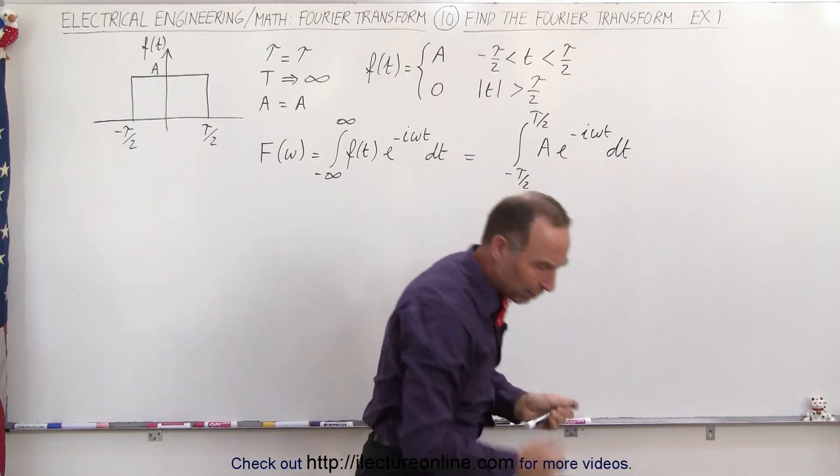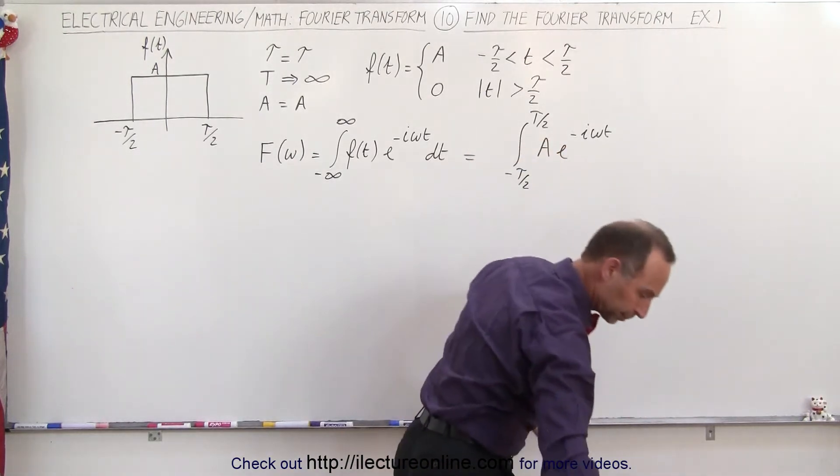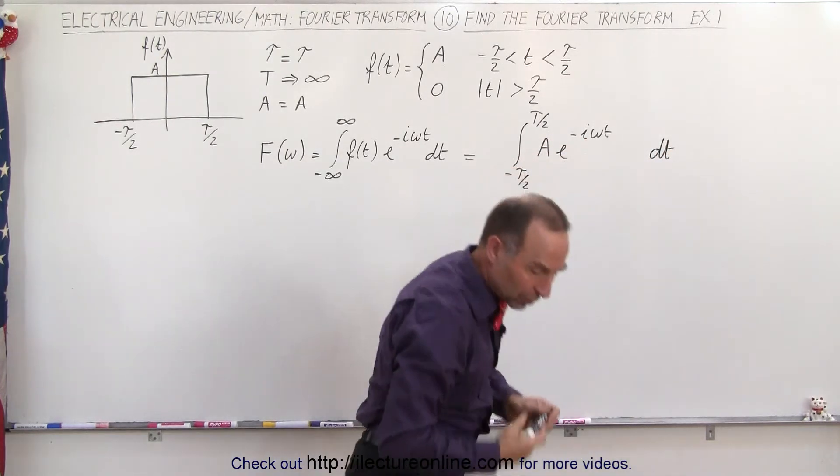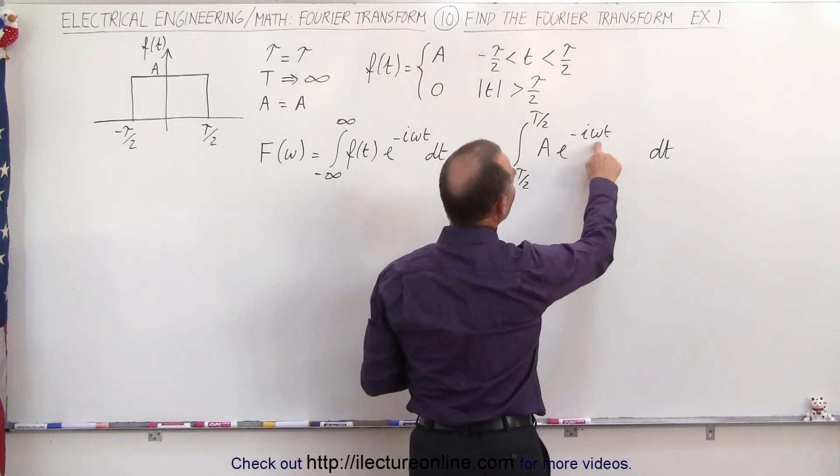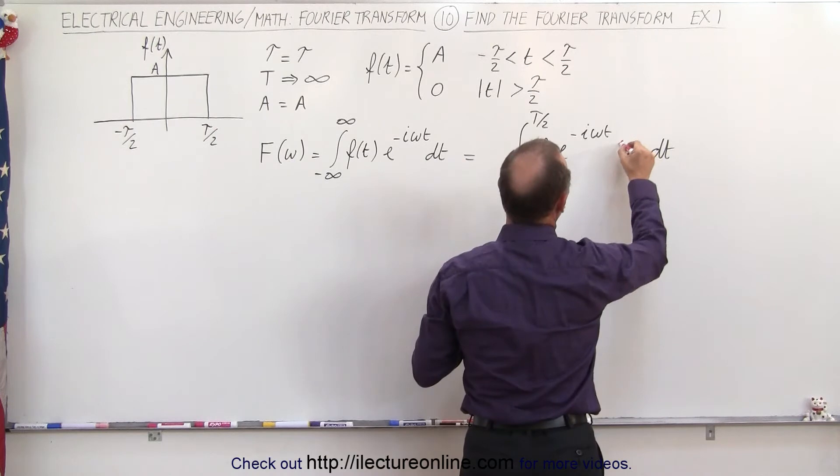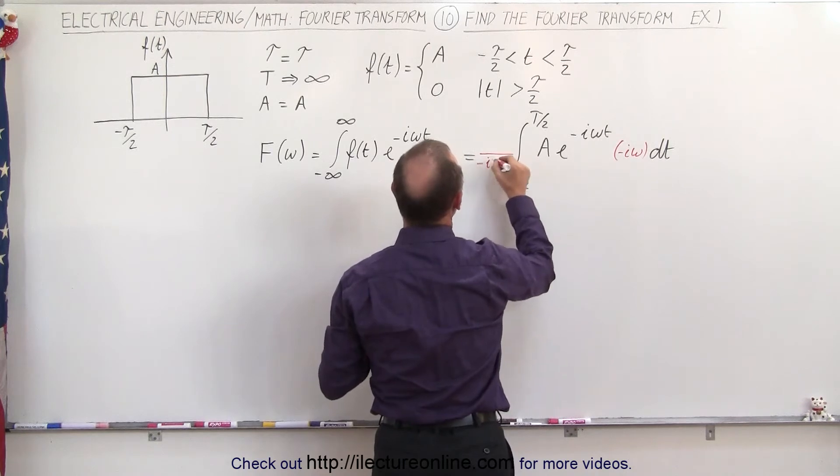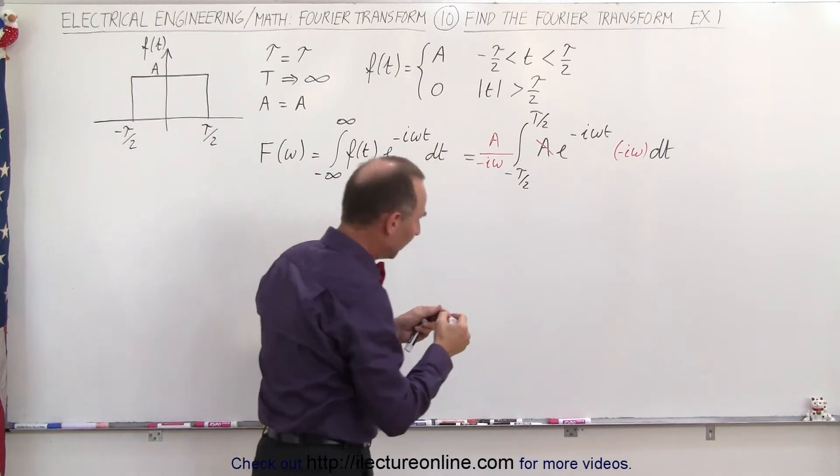Now what I'm going to do is I'm going to move that dt over a little bit—I'm going to need some room—because what I want to do is I want to add the differential. Since I have an e to the minus i omega t, I'm going to need a minus i omega here to have the proper differential, and of course I need to divide by a minus i omega, and then eventually I can take the A and put it outside the integral sign as well.